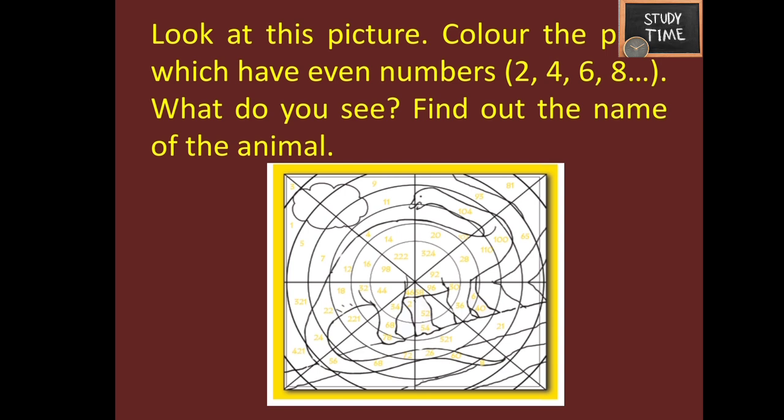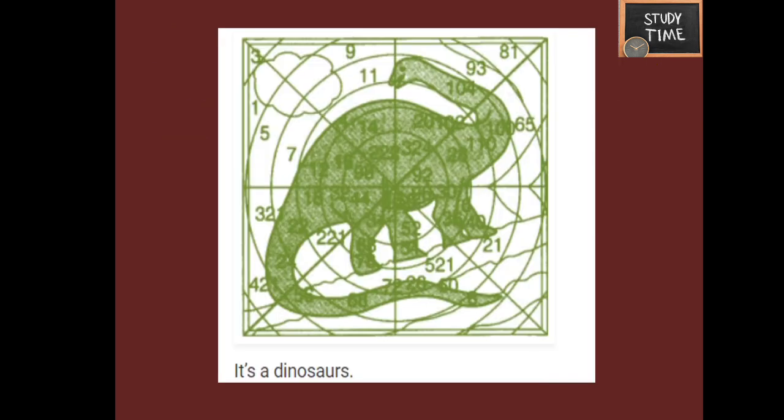Next, look at this picture and color the parts which have even numbers. What do you see? Find out the name of the animal. If you color the even numbers you will get this animal — it is a dinosaur. Many, many years ago there were dinosaurs on earth, but not anymore. We see these animals in films, photos, and books. Gather a few details about dinosaurs and share them with your friends.